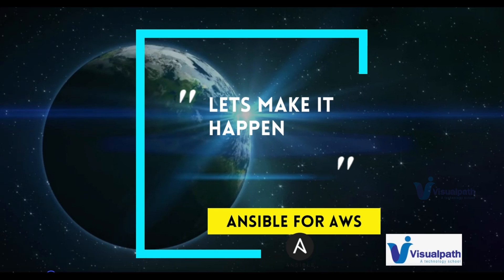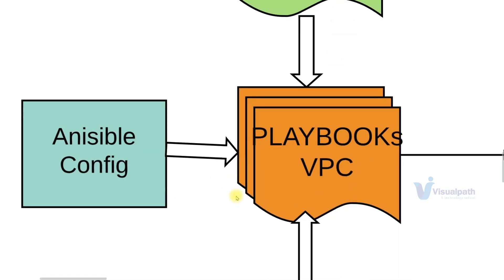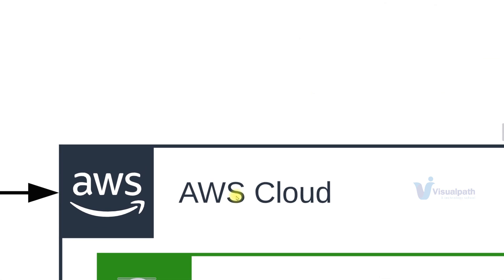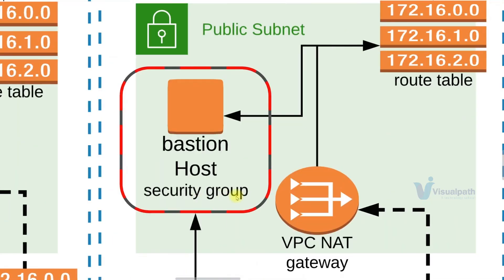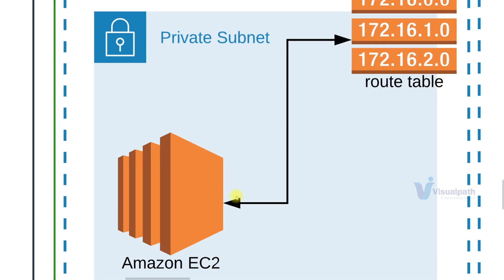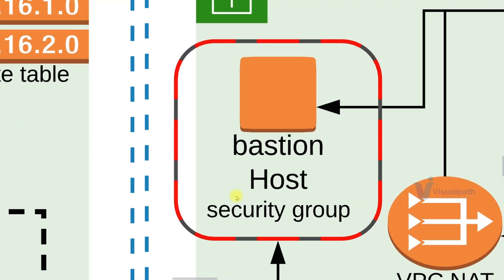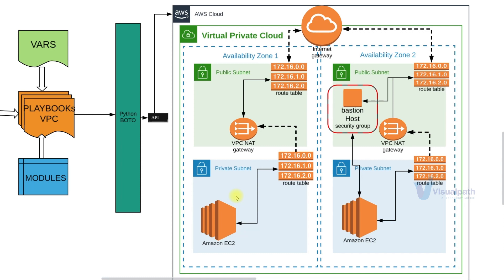We have three architectural designs in this project: one for VPC, one for EC2 instances, and one for provisioning the vprofile stack. The first design is for VPC setup. We have a playbook from the previous project that uses variables, configuration, and modules which use Python Boto to connect to the AWS cloud account. It creates a VPC with subnets distributed across multiple zones — public subnets with an internet gateway, and private subnets connecting via a route table to a NAT gateway — plus a bastion host inside a security group. We execute that playbook to set up this stack.